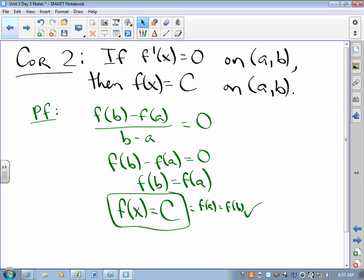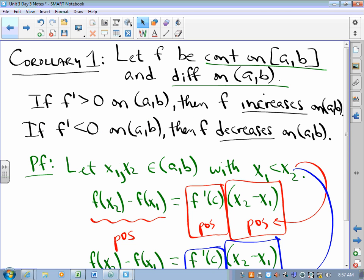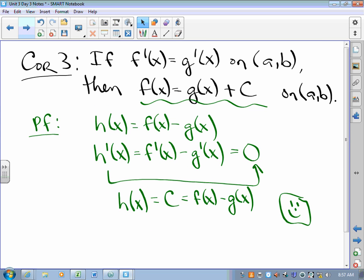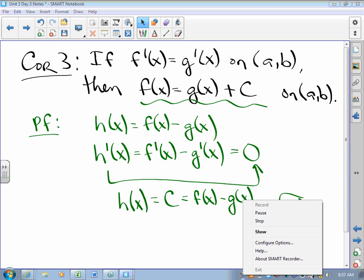What are our highlights for today? We know the increasing, decreasing test because of the mean value theorem. F is increasing if F prime is positive. F is decreasing if F prime is negative. We know that if you have a derivative of zero on some interval, you are a constant. That's the only way to do it. And if two functions have the same derivative, then they are the same function, plus or minus a number. There you go. Lesson three, in the books.